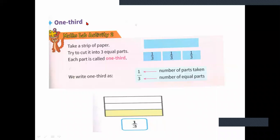Next, one third. Take a strip of paper and try to cut it into three equal parts. Always remember you have to cut it equally — three equal parts. A strip is cut into three equal parts and each part is called as one by three, or one third. One third is represented as one by three. Three equal parts are cut, so we write three below. One part is taken, so we write one above. Number of equal parts goes down as denominator, and part taken goes up as numerator.